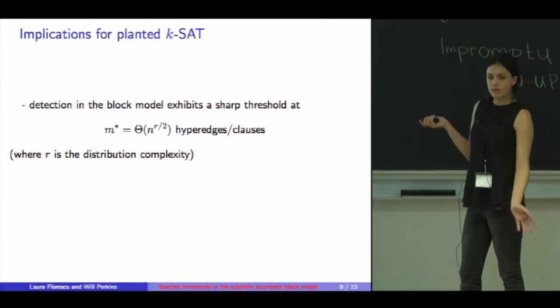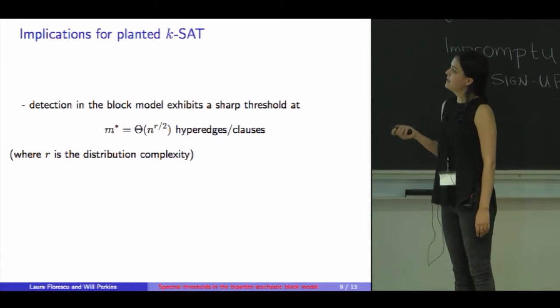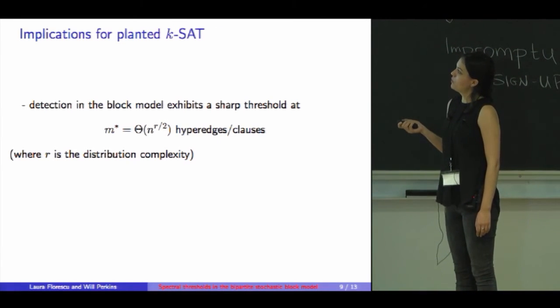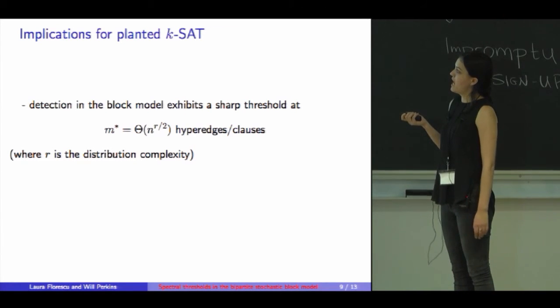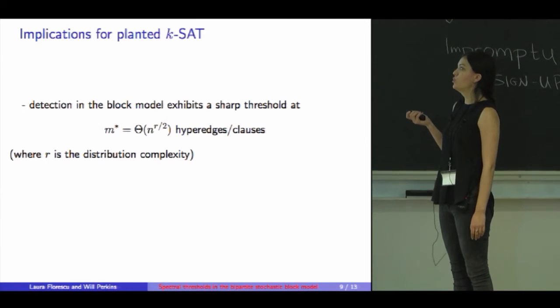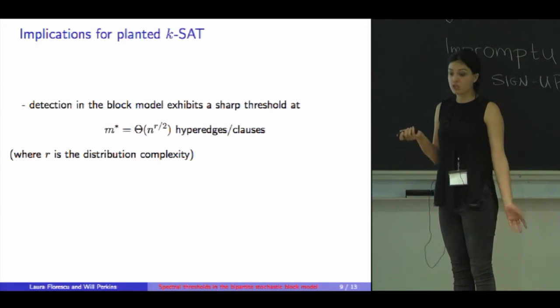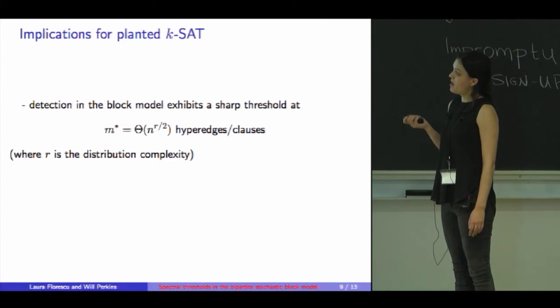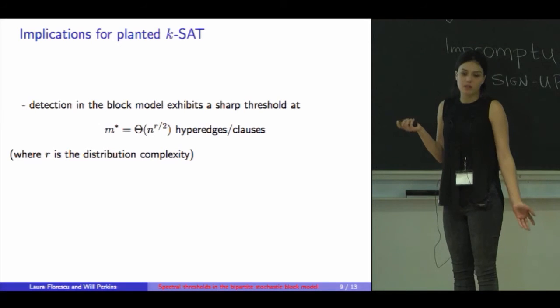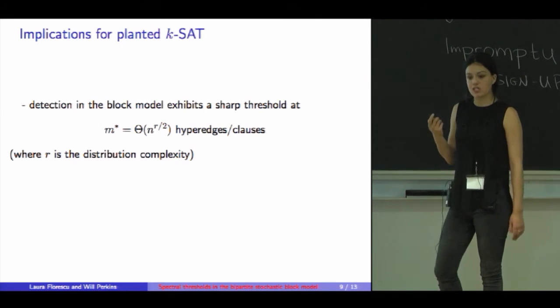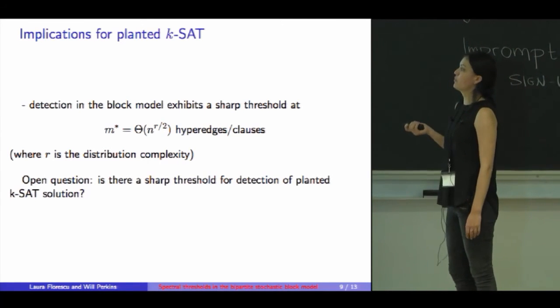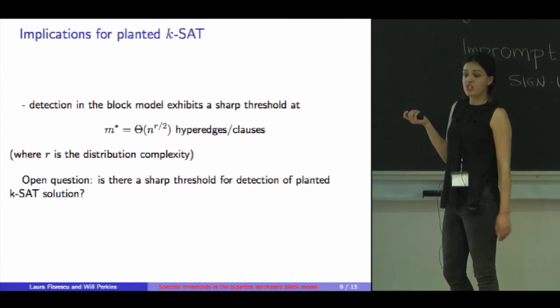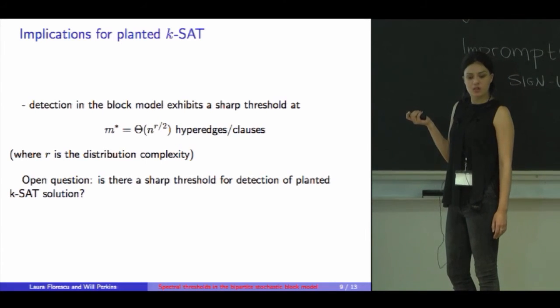Just to briefly mention implications for planted K-SAT, this means that we have a sharp threshold for recovery when we have theta of N to the R over 2 clauses. If you're familiar with distribution complexity, in the interest of time I'm not going to introduce it, but this parameter R is the distribution complexity of the distribution that we draw the clauses from. There's a natural open question: is there a sharp threshold? Our reduction cannot do better than this threshold.